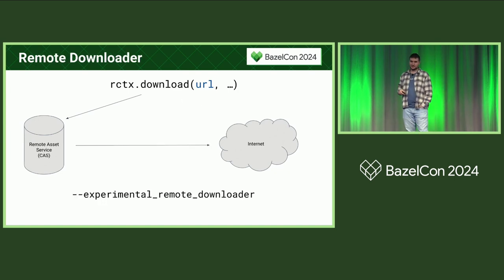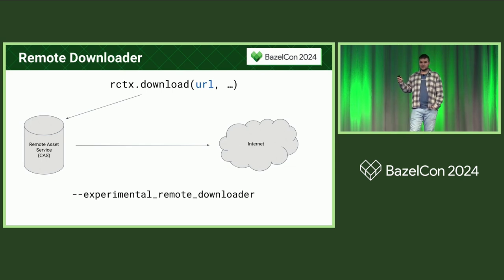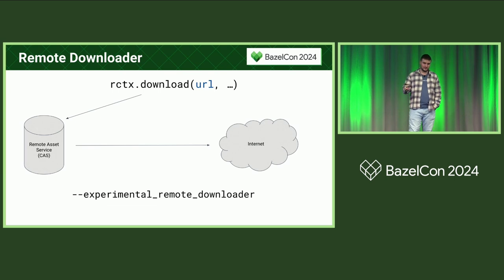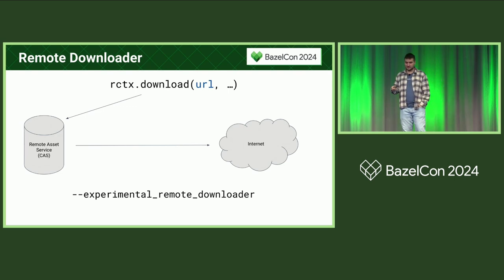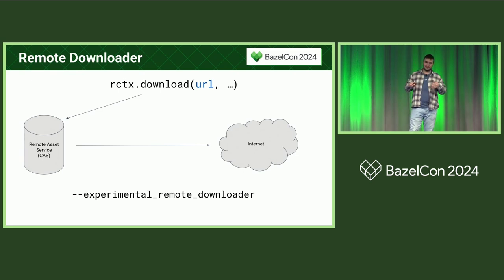Next, the remote downloader. This is a bit more niche and also experimental, but what it allows you to do is basically use some kind of proxy to download files. It uses gRPC under the hood, but the nice thing is it doesn't have to actually use networking at all — it can also just use a Unix domain socket, and you forward your request to this remote asset service which can handle it however it wants. You could also have some system where you pre-seed it with files already available, and then it's much faster than accessing the internet.